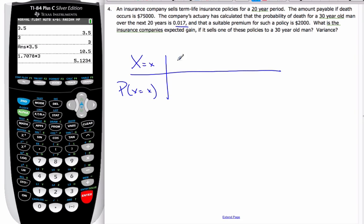Well there are really only two possibilities that could happen. The one possibility is the person lives and you get $2000 from them. The second possibility is this person dies and so you have to pay out not $75,000 but $73,000 because you collected $2000 from them. So these are the possible outcomes and those are the only two possible outcomes. The probability associated with them, well this is the probability of the man dying 0.017 and so the probability of living is 1 minus 0.017 which is 0.983.